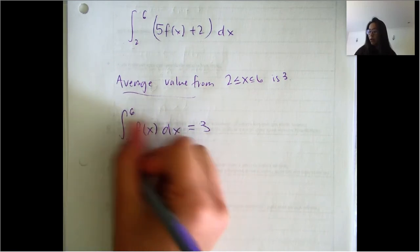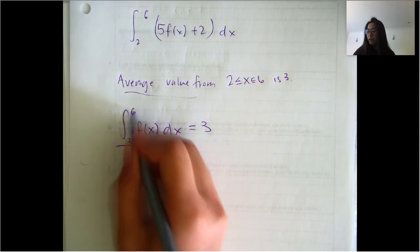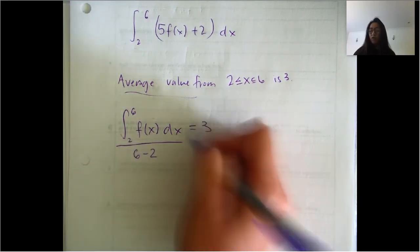So that's the integral over interval. So integral over the interval, six minus two. So this should equal three.